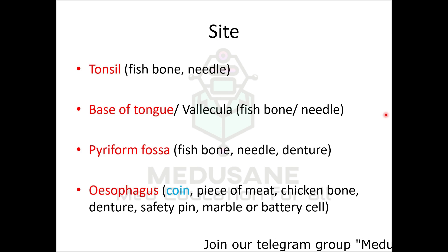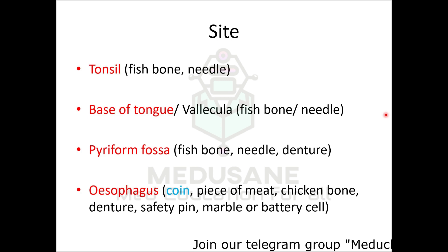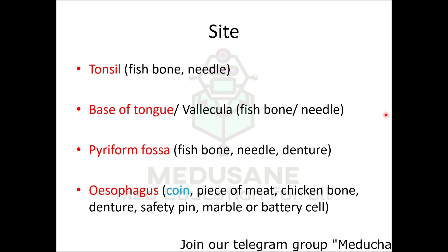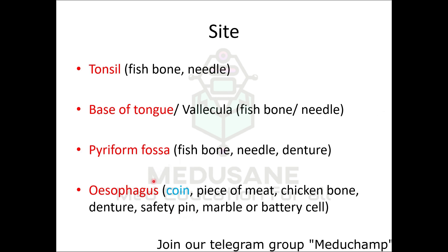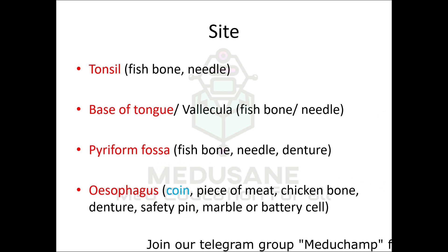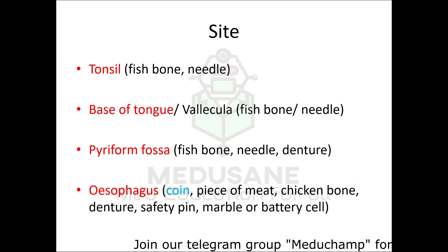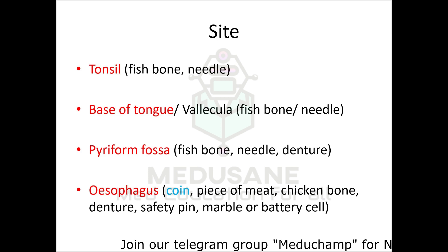Further down, the foreign body can be in the esophagus. In the esophagus the different types of foreign bodies can be a coin, a piece of chicken, a chicken bone or piece of meat, a denture, a safety pin, a marble, or a battery cell. In clinical practice, a coin is one of the very common foreign bodies in the esophagus, especially in children. So unless I say otherwise, I will be dealing with coin as the example.